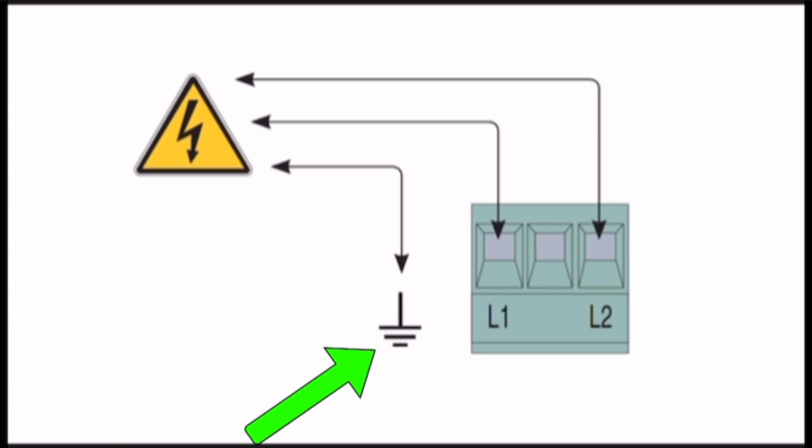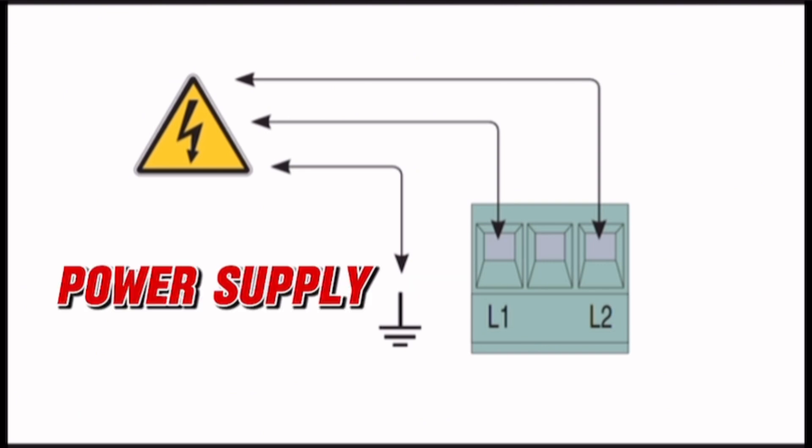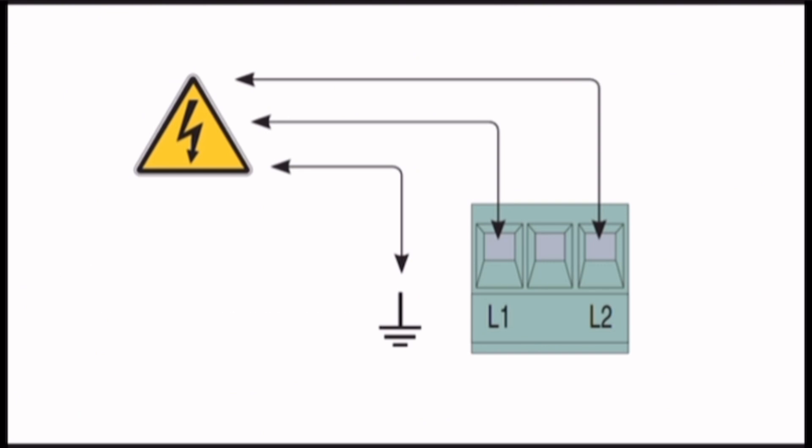Explanation of connections: Power supply L1 (Live) and L2 (Neutral) are connected to the main power input. The ground terminal ensures electrical safety by grounding the control board chassis.